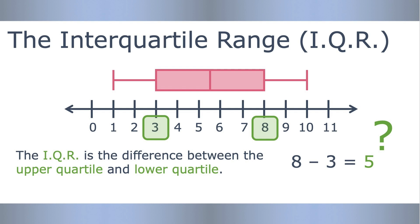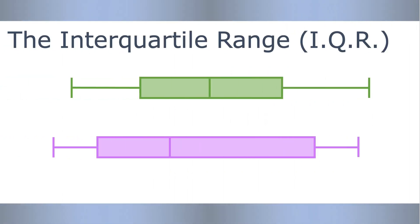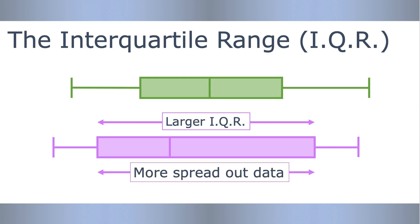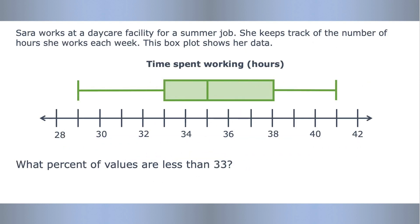The interquartile range is a way to measure the variability of your data. If one data set has a larger interquartile range than the other, you would say it has more variation, which means the values are more spread out. I think we're ready for some real-world problems, so let's go.